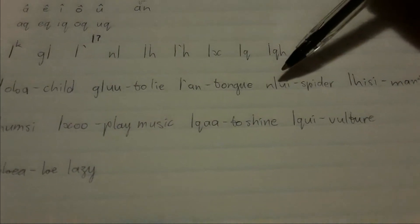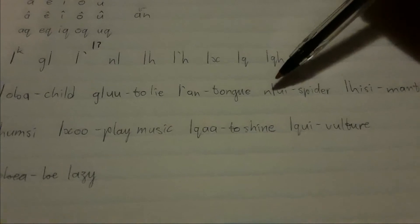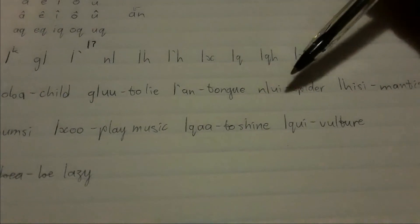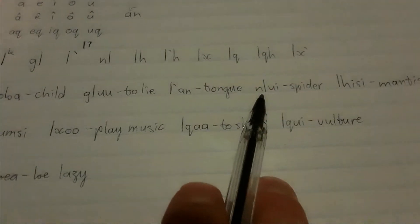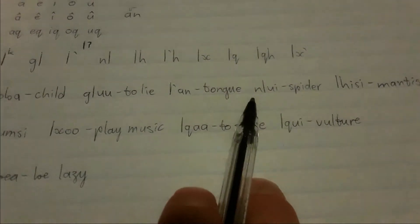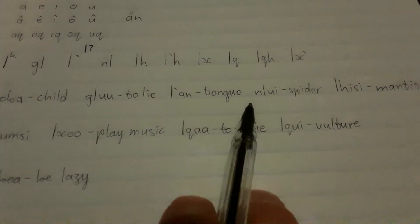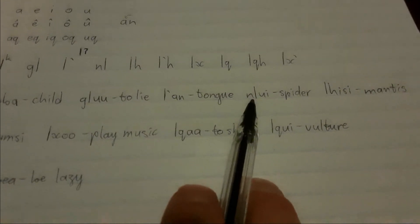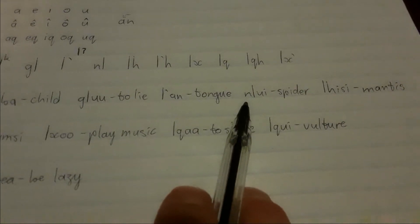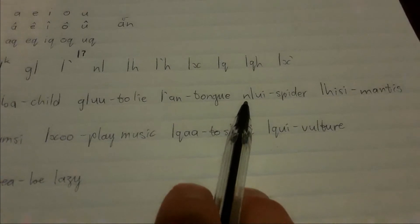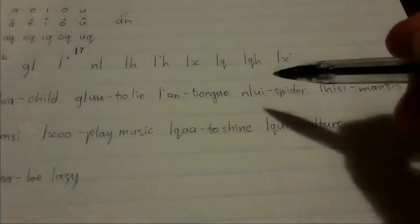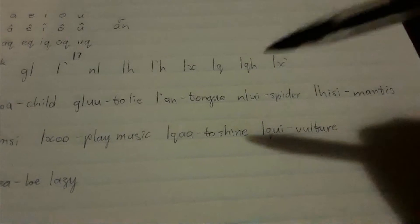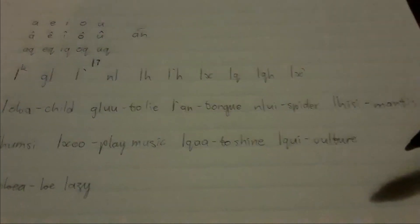The next one is called the nasalized click — 'mui,' which means a spider. So you're holding an N, and while you're holding that N you're pronouncing the click. It's easier than you think — you're saying [nasalized click]. You're holding an N and pronouncing the click while you're doing it. It's surprisingly simple.